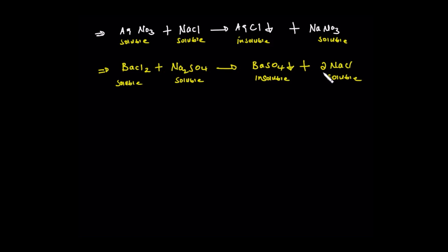To summarize: the types of displacement reactions are single displacement reactions and double displacement reactions. In single displacement reactions, one element reacts with a compound and substitutes one element — it is a replacement. The general form is A reacts with BC.